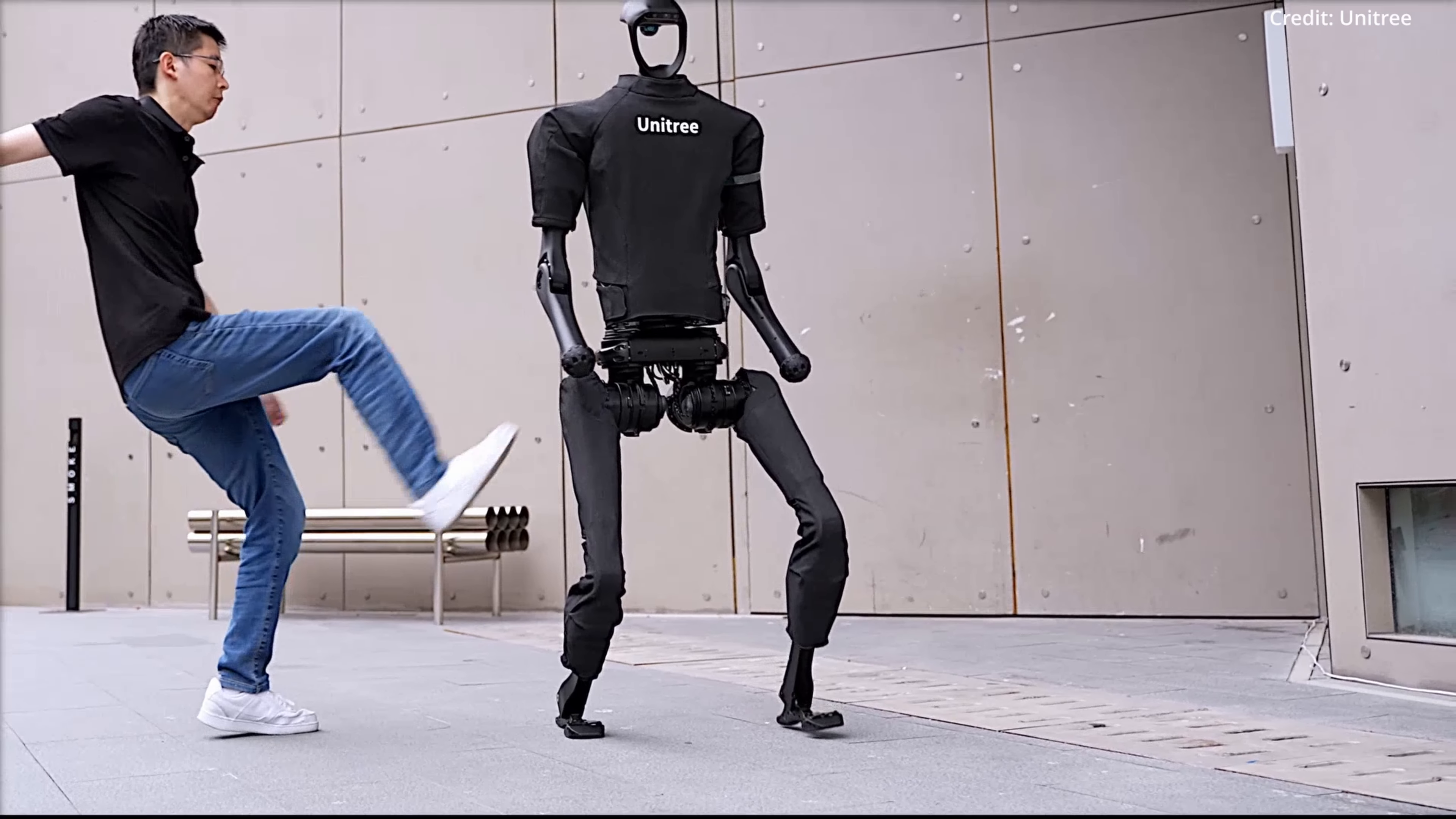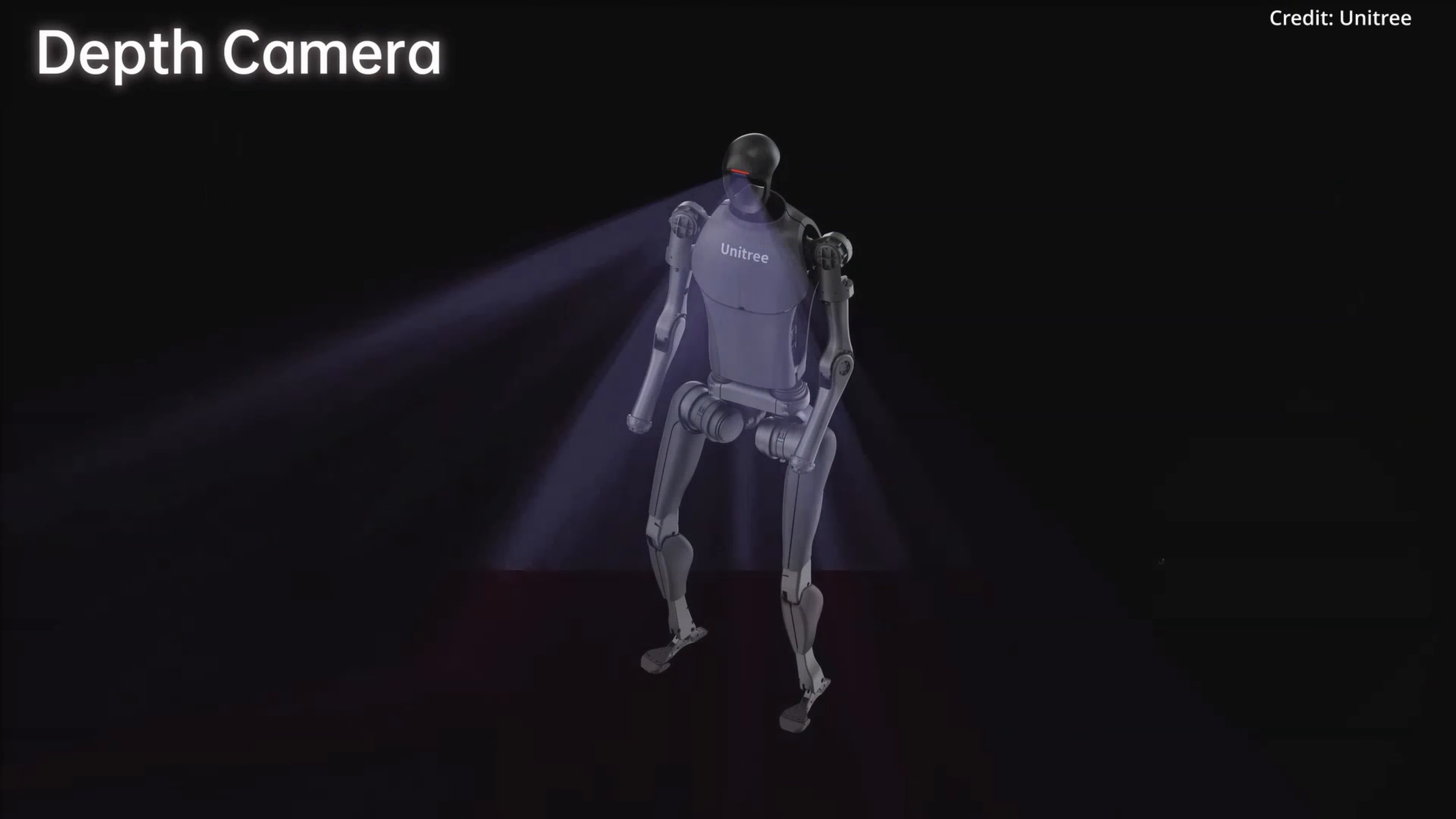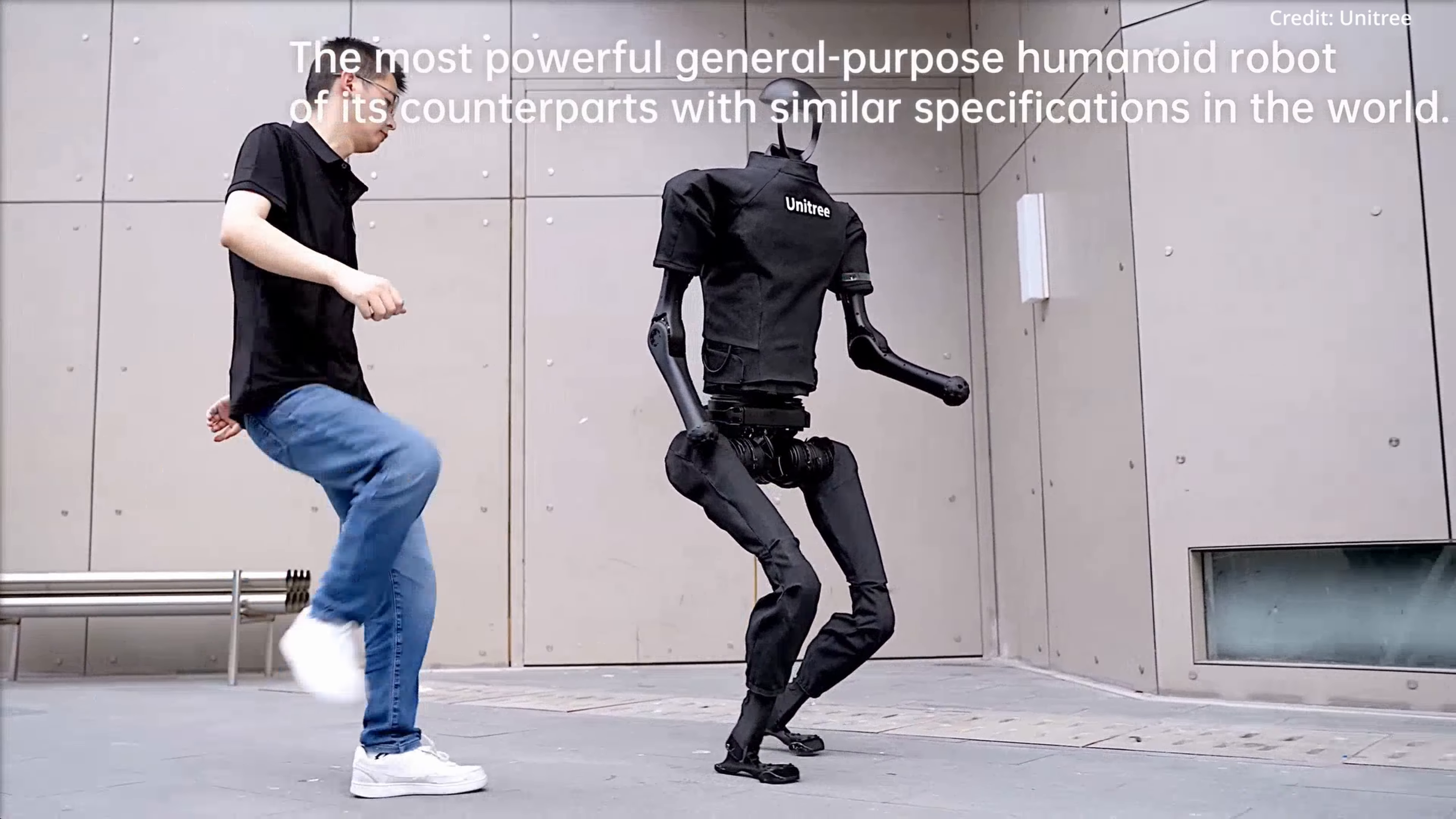In the video, H1 confidently strides down a street, demonstrating its impressive autonomous navigation capabilities. Equipped with advanced features such as 3D LiDAR and a depth camera, the robot effortlessly maneuvers through its surroundings with grace and precision. Interestingly, H1 even withstands a series of kicks, showcasing its durability and stability.